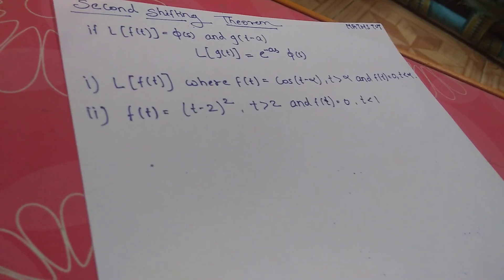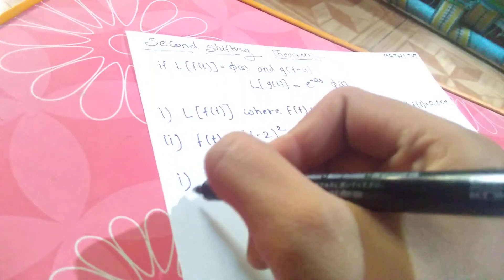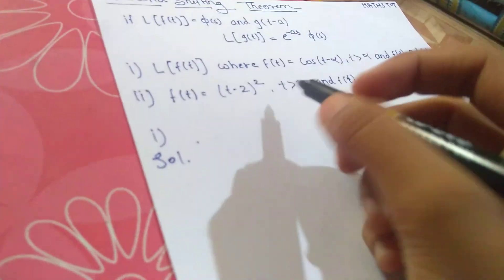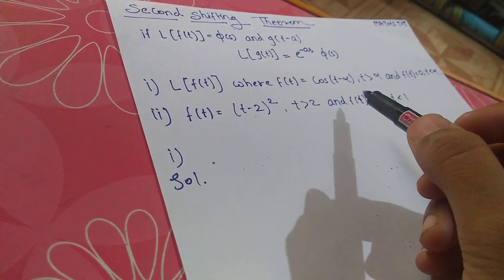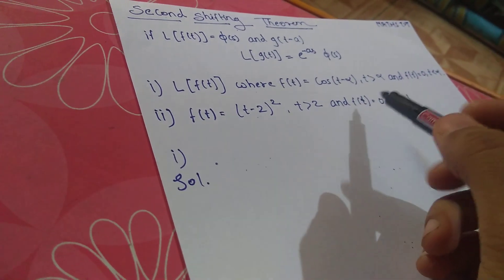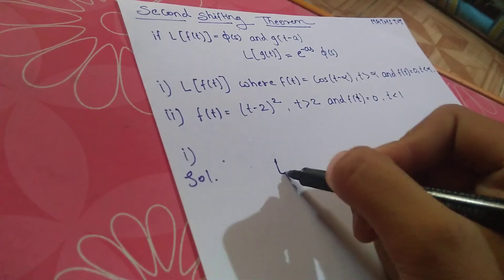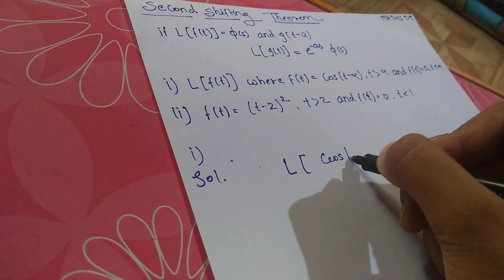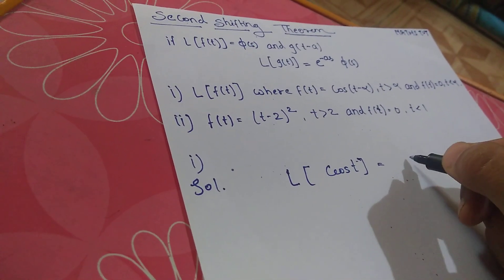Now let us start with the first sum. First, what we have to find out: f(t) = cos(t-alpha) when t is greater than alpha. So what is Laplace of cos t? It equals s/(s^2+1).